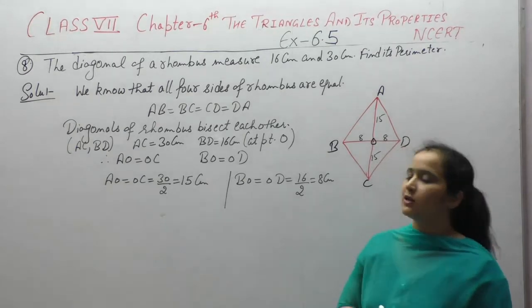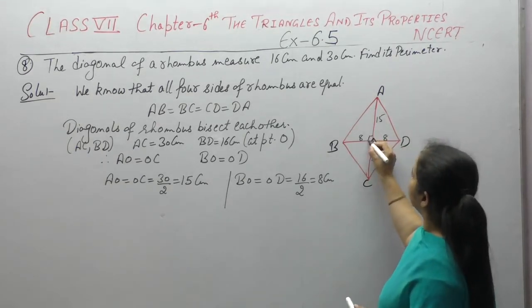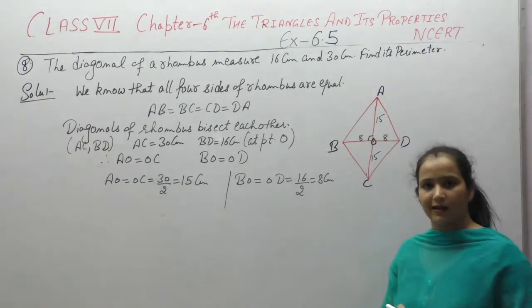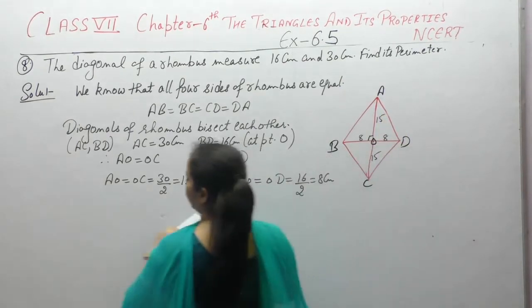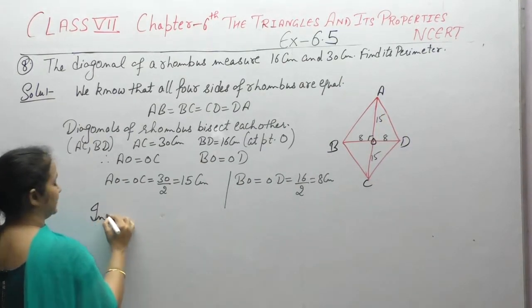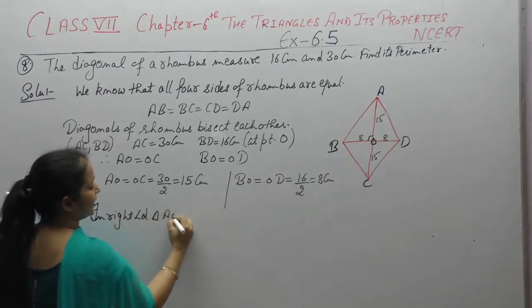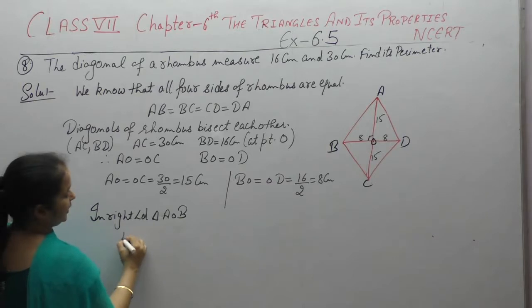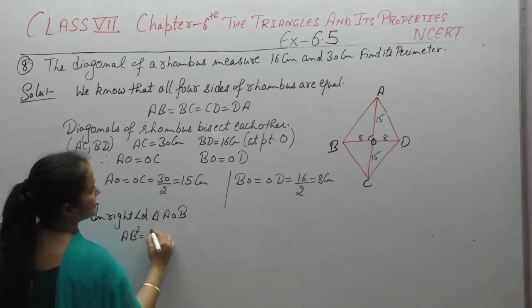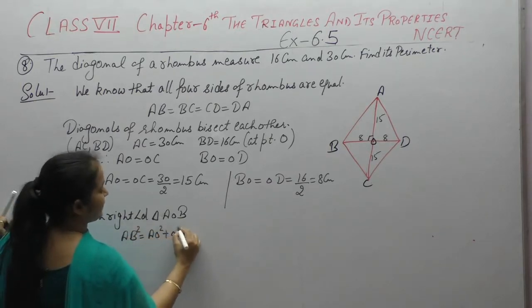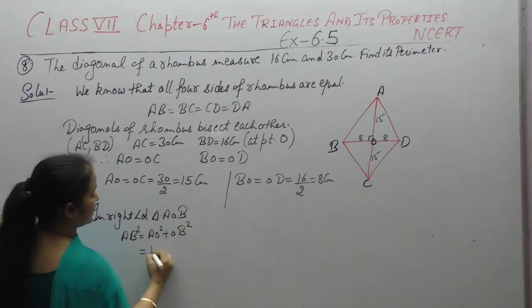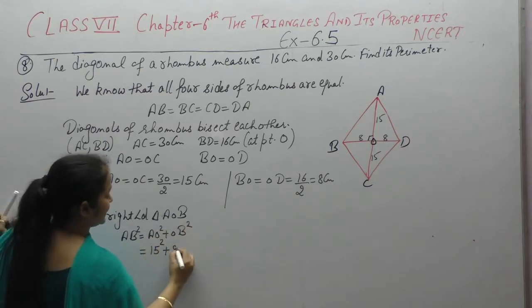Now diagonal of rhombus bisect at 90 degree angle. So our triangle is AOB. In right angled triangle AOB, hypotenuse square is equal to perpendicular square plus base square. AO is 15, OB is 8.